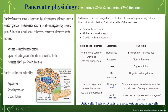Regarding endocrine function, the major role is played by the islets of Langerhans — clusters of hormone-producing cells that secrete directly into the circulation. Endocrine cells of the pancreas include beta cells secreting insulin, alpha cells secreting glucagon, and delta cells secreting somatostatin.